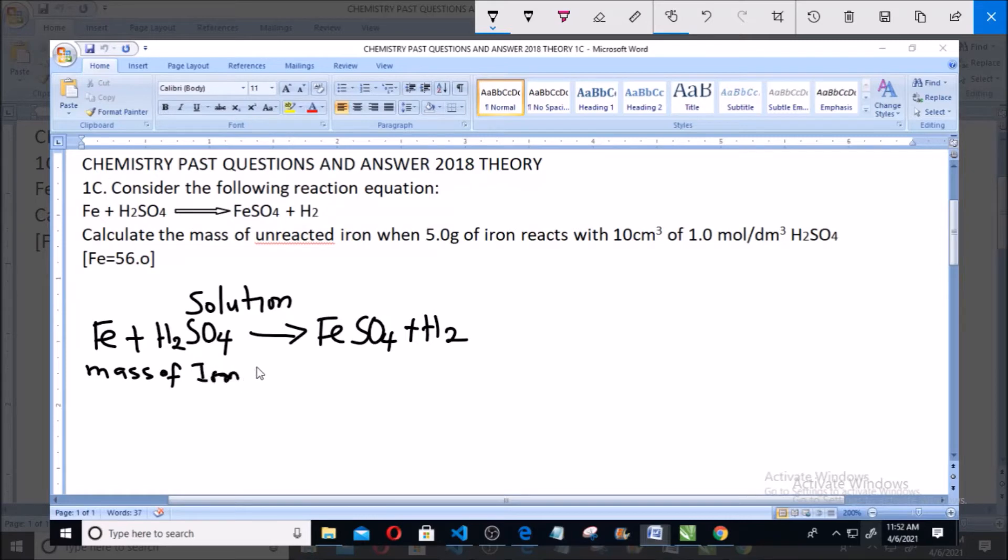Mass of iron reacted is equals to 5.0 gram. Mass of unreacted iron is unknown.